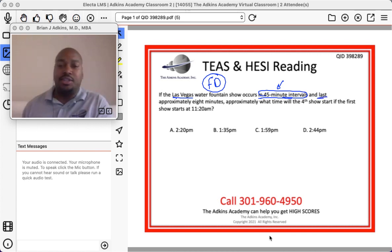And the show lasts approximately eight minutes. So within that 45 minutes, you have the eight minutes that the show lasts. However, each show occurs 45 minutes after the previous show. And so given that, approximately what time will the fourth show start if the first show starts at 11:20 a.m.?